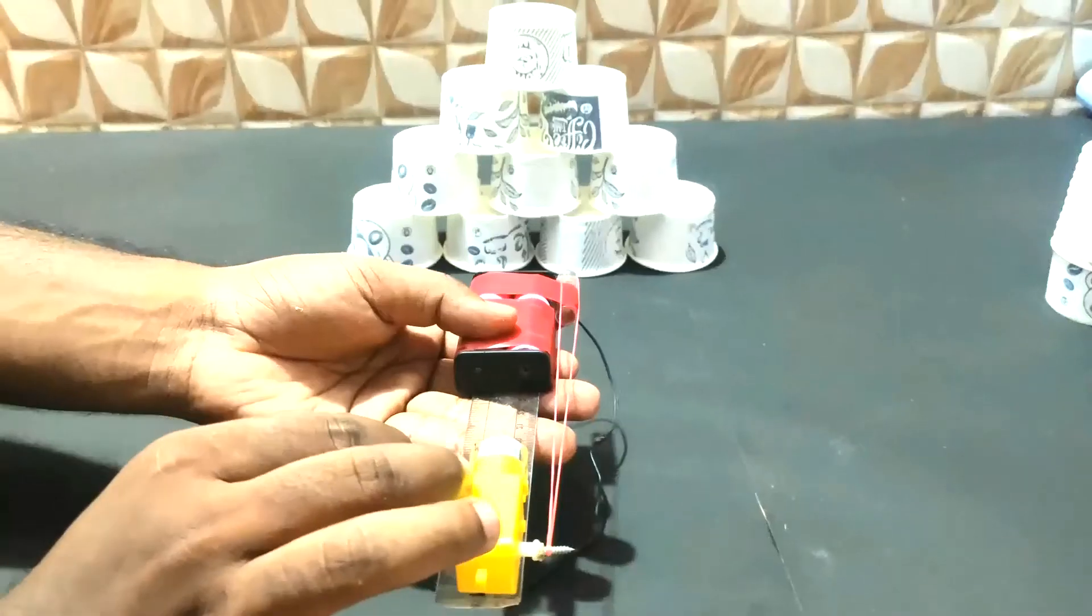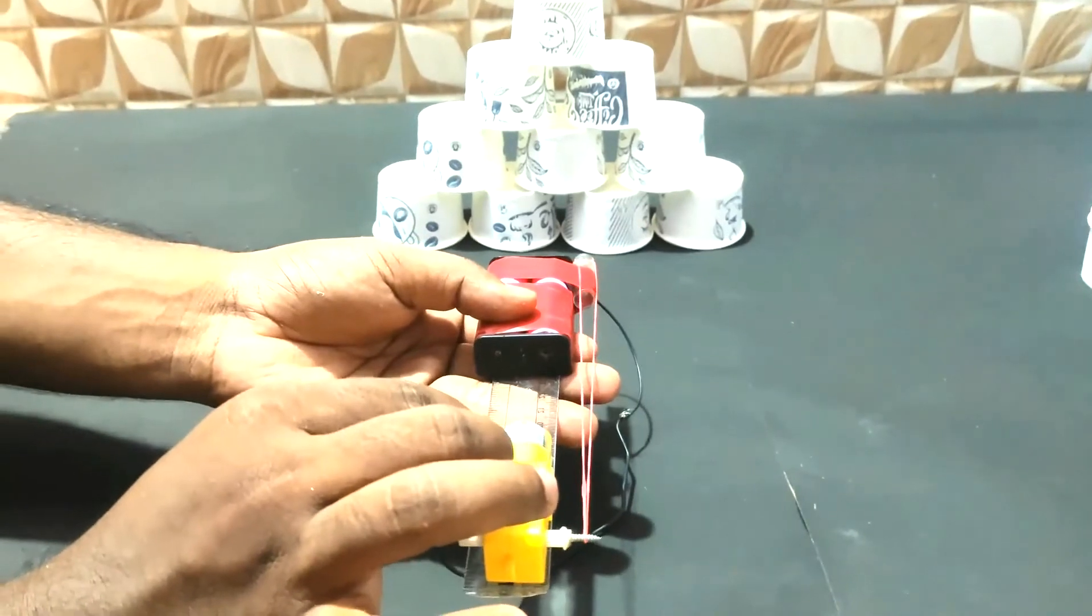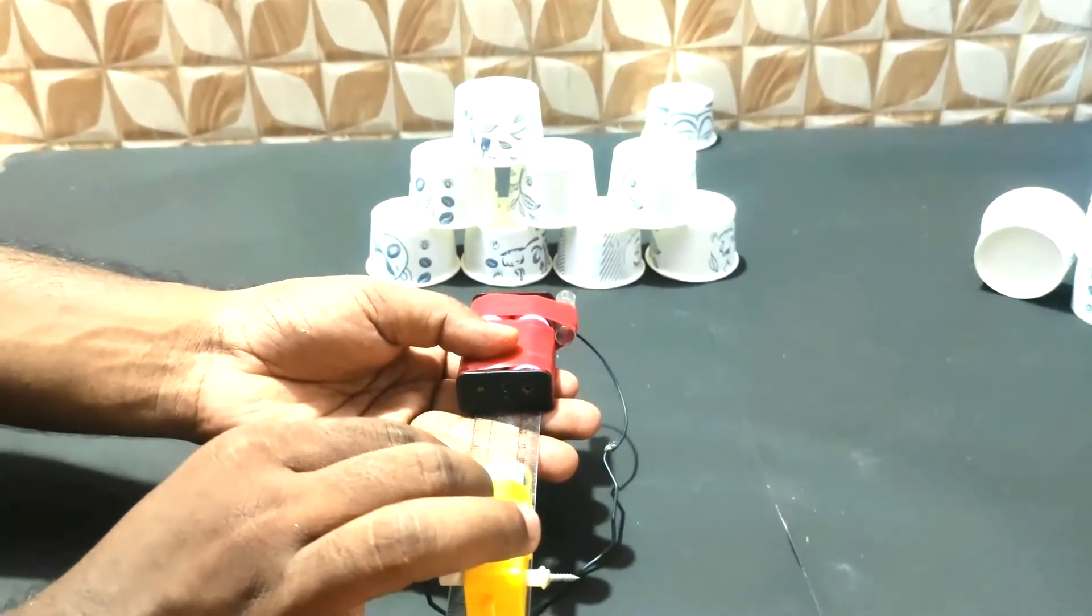Now cut the ruler and attach the motor. The shooting part is ready, now switch on the battery to shoot.